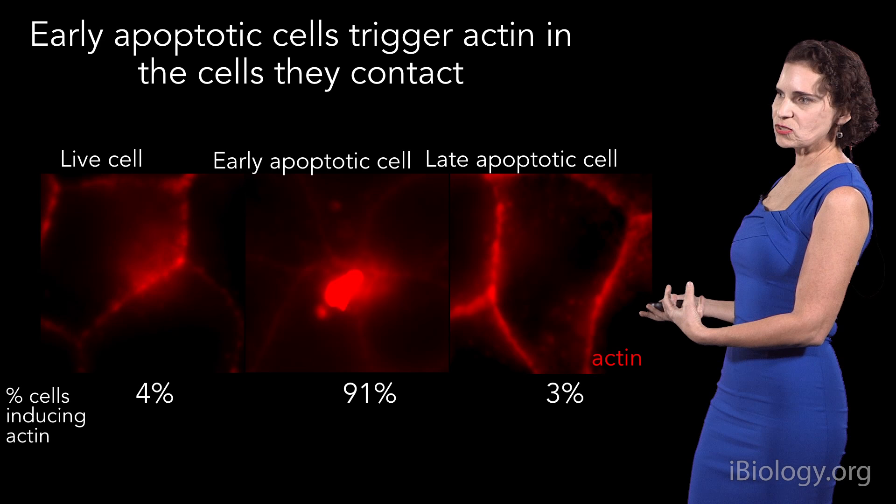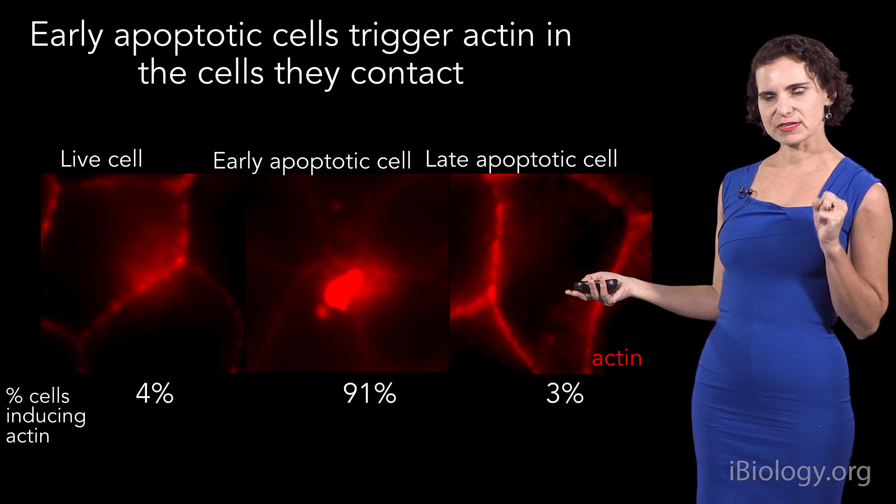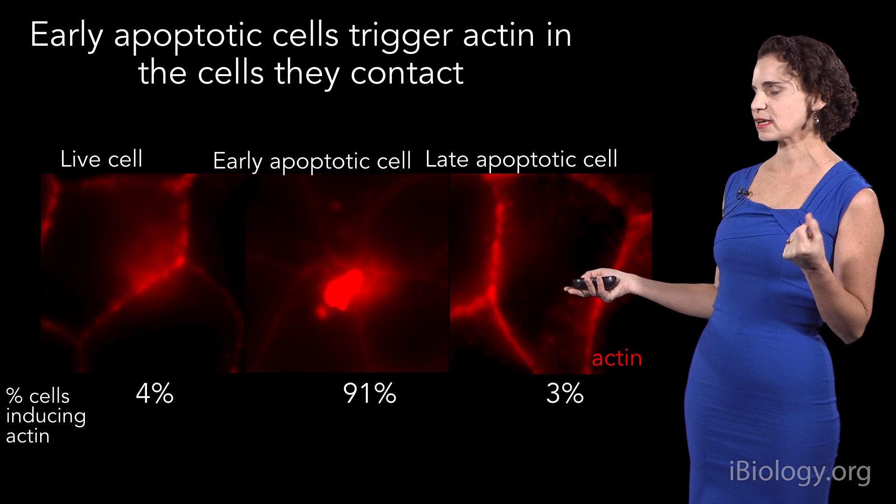Furthermore, late apoptotic cells did not cause actin assembly, which was interesting because it also suggested that this wasn't a phagocytic cup that might engulf the added apoptotic cells. So this suggested that there was something on the outer surface of this early apoptotic cell that was triggering this actin-myosin cable to form to squeeze the cells out.